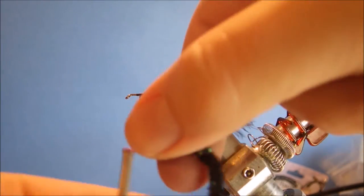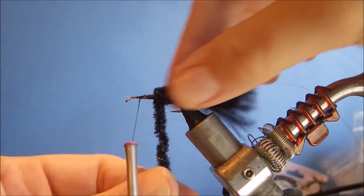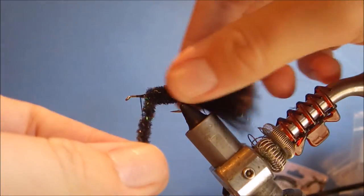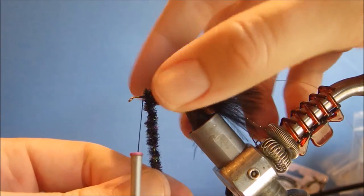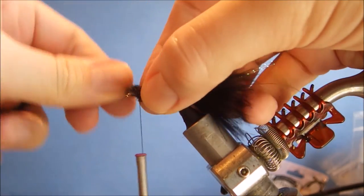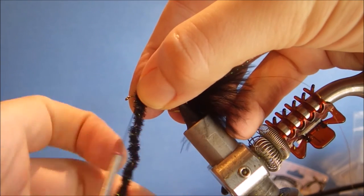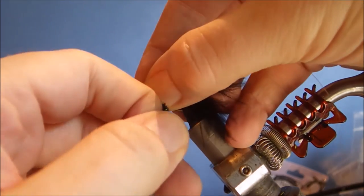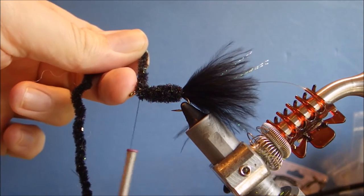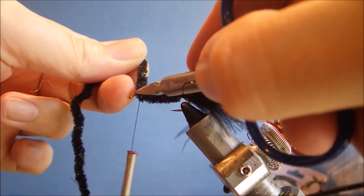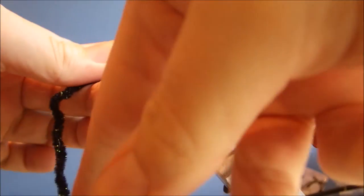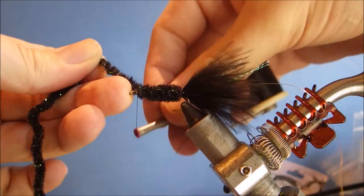So now I'm just going to wind this forward, one turn in front of the other. I'm going to leave myself some room, about an eighth, three sixteenths, something like that at the front.